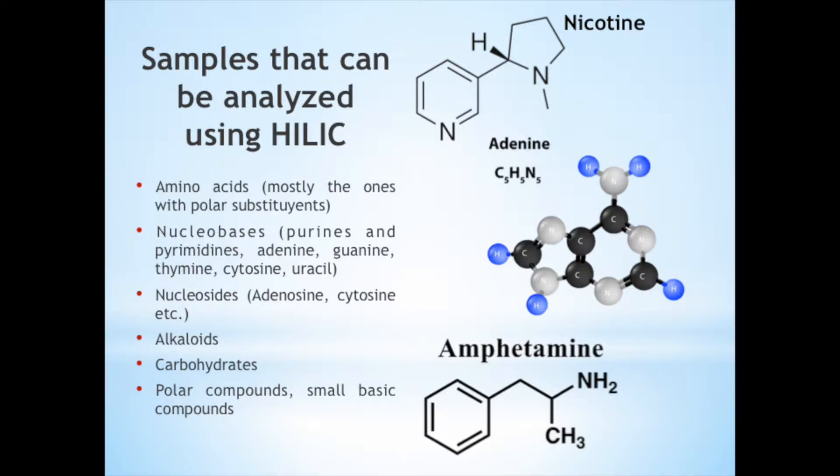Some types of samples can be nucleobases, purines, and pyrimidines. HILIC is used in the biochemistry area to separate a complex mixture and determine different nucleobases simultaneously in a sample.